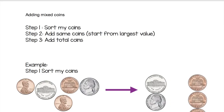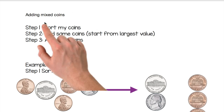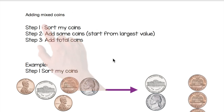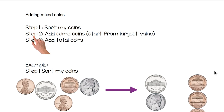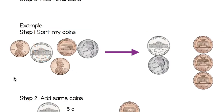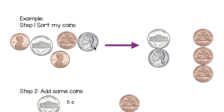Okay guys, let's review what we did today. At the very top you'll see our three steps for adding mixed coins. Step one: sort my coins. Step two: add same coins. Step three: add total coins. We had a bunch of coins from my piggy bank and the first thing we did was sort — we put our nickels together and then our pennies together.